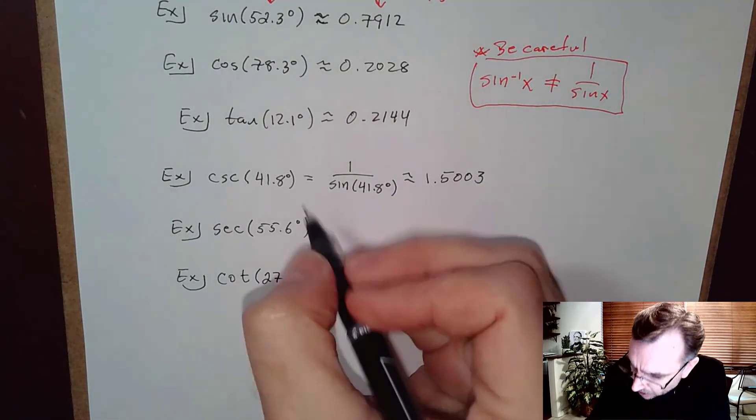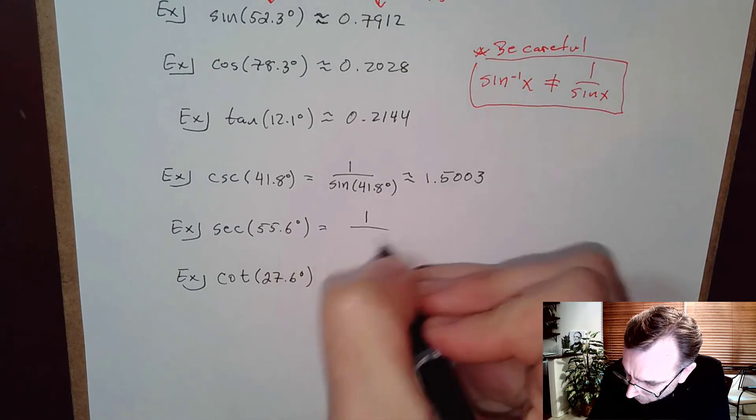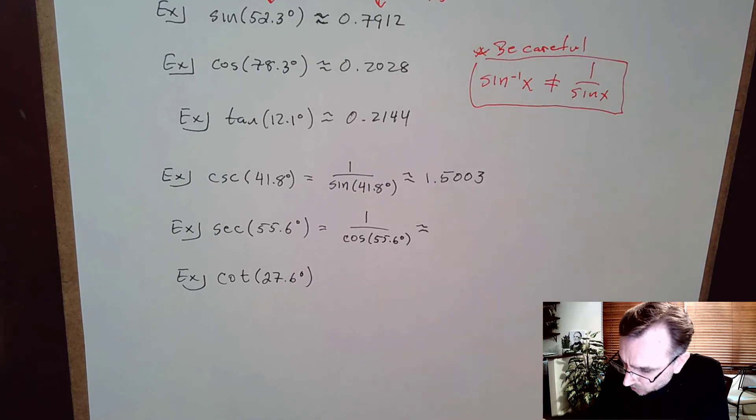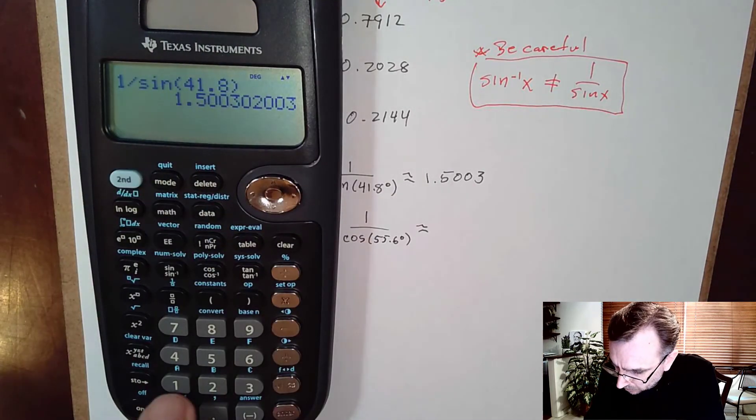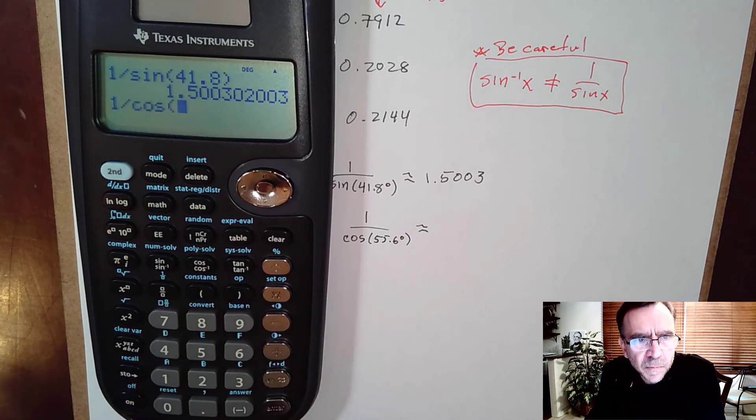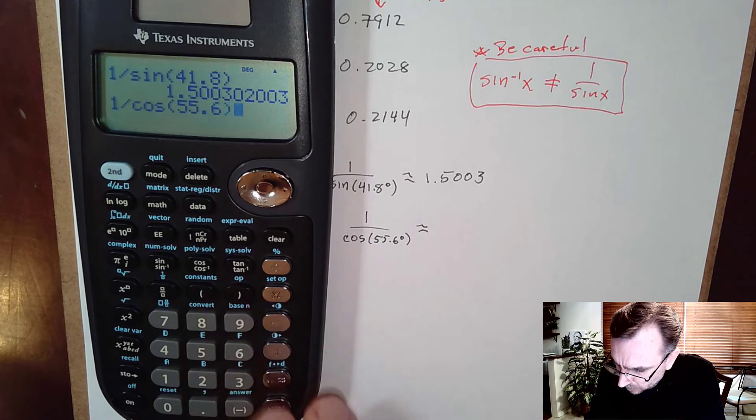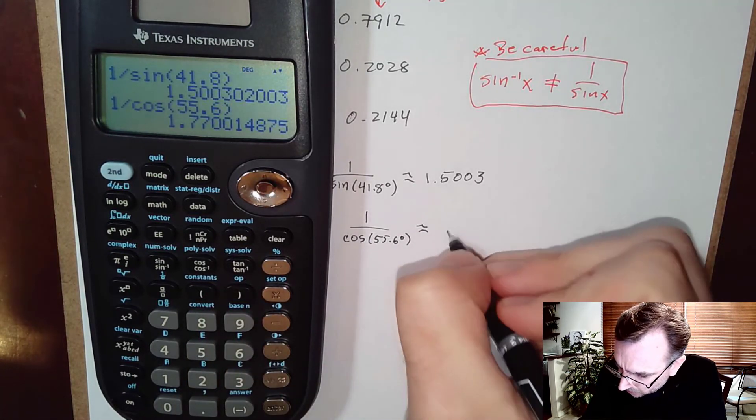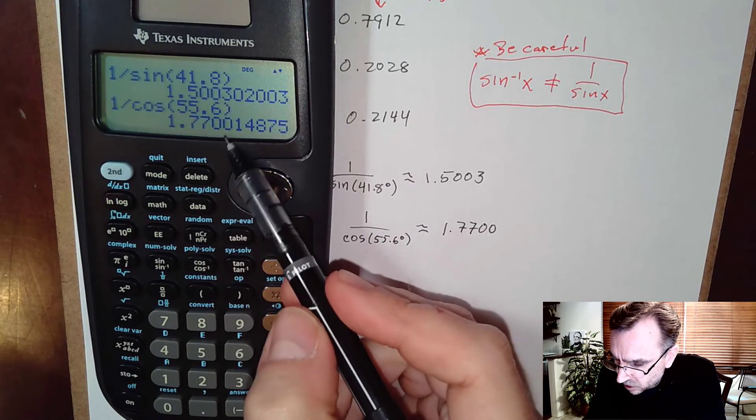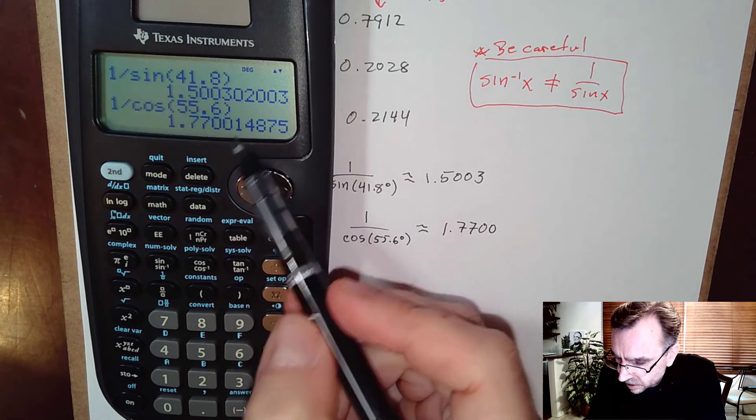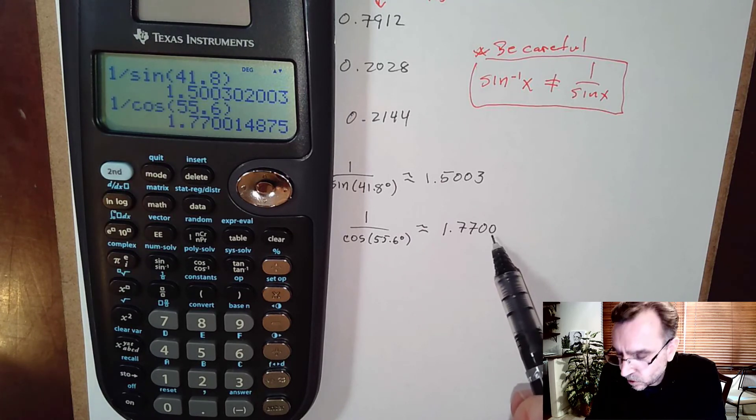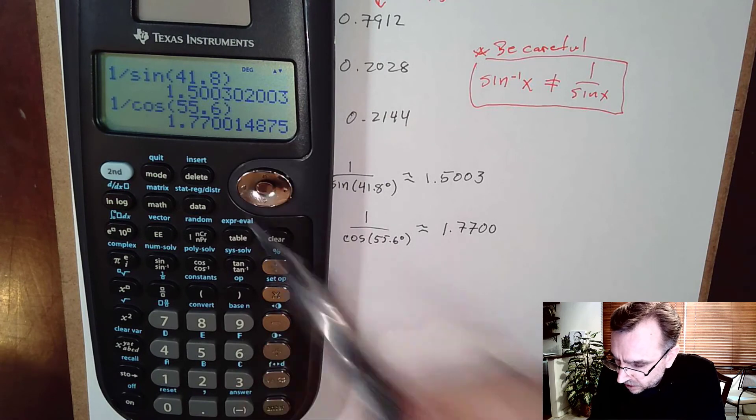We know secant is 1 over cosine, so we would write 1 over cosine of 55.6°. That's approximately equal to 1.7700. I will keep the zeros because that tells whoever's reading my work that I actually did round off properly to four decimal places, so keeping that zero is important at the end.